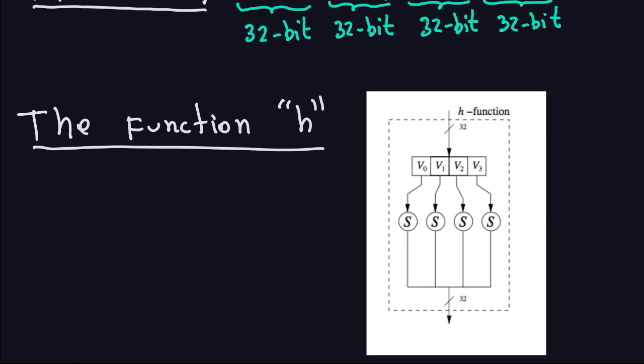The function h does not have the RCI XOR step that the g function has. So in a sense, the h function is easier than the g function — it has no left shifts and no RCI. Therefore the h function is exactly the same for all rounds; it doesn't change with the rounds. The g function, by contrast, does change with each round because the RCI is different for each round.